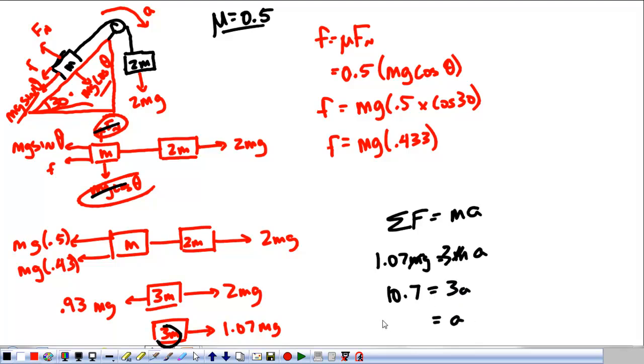And so my acceleration, divide both sides by 3, comes out to be somewhat close to 3.4 meters per second squared.